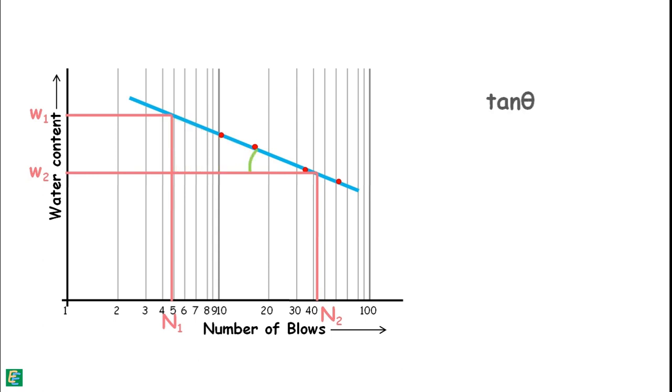And that will be the slope of this curve, which is the flow index of the soil. Slope will be equal to this. And by log rules, we can write it as this.